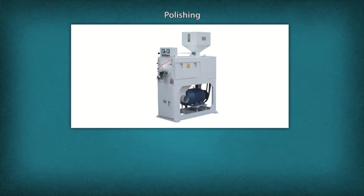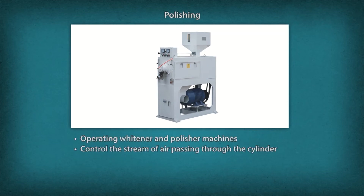Polishing. A grain mill operator performs the following tasks at the polishing stage: Operating husk and polisher machines. Control the stream of air passing through the cylinder to cool the grain and to blow off the bran.